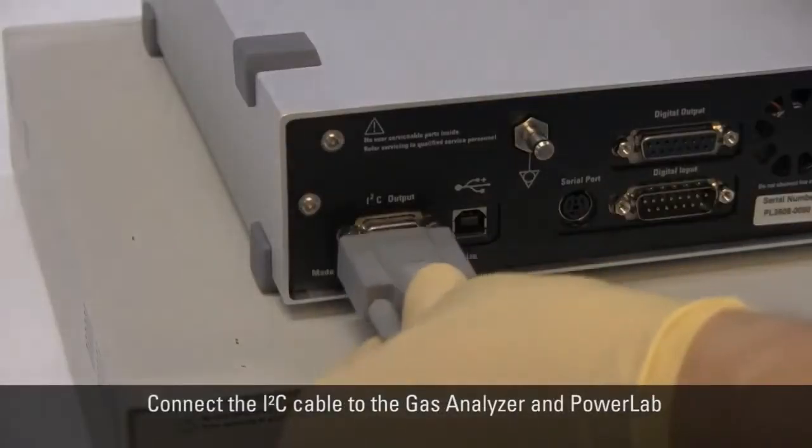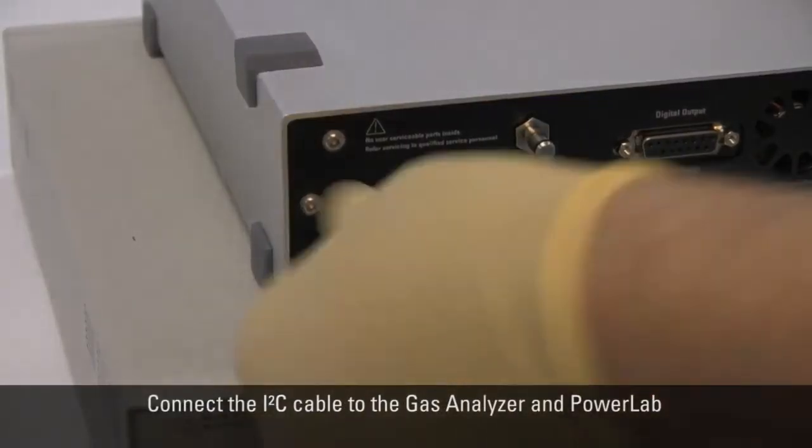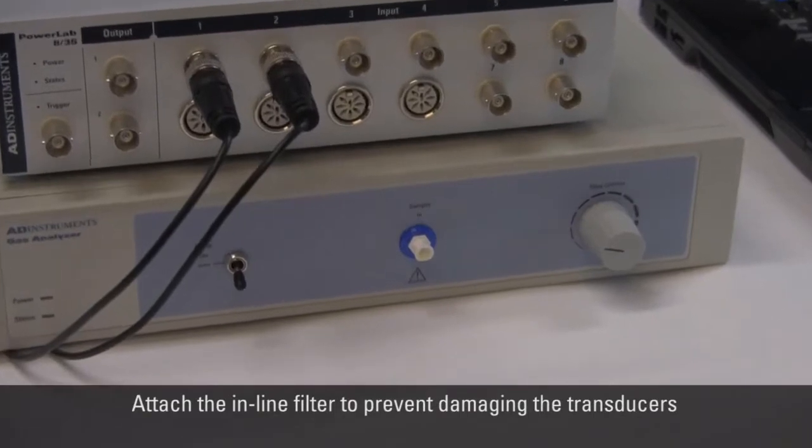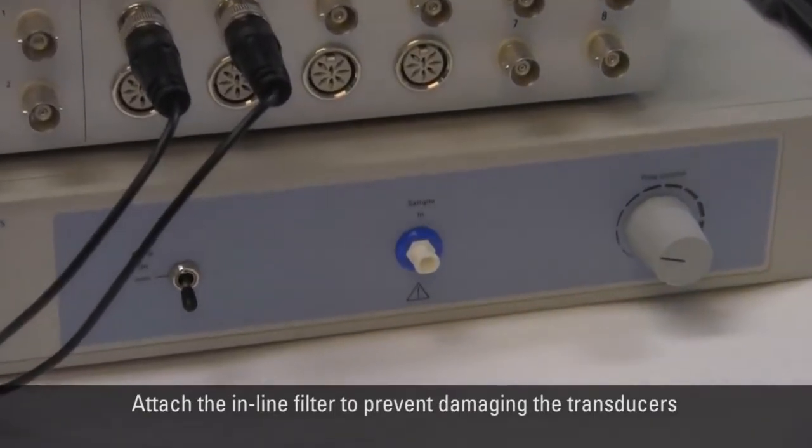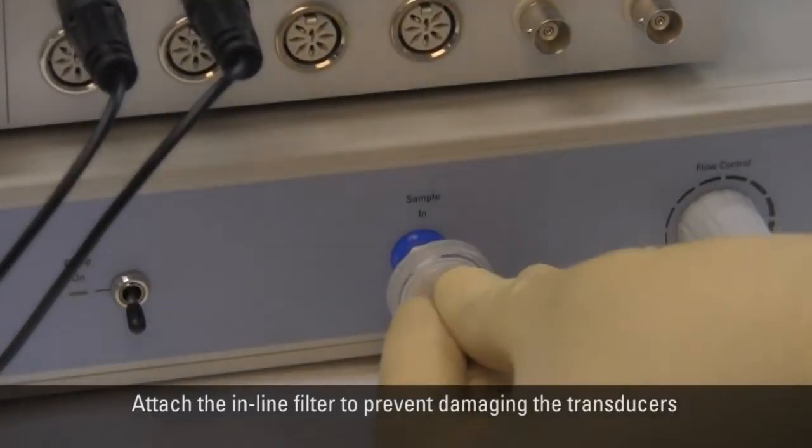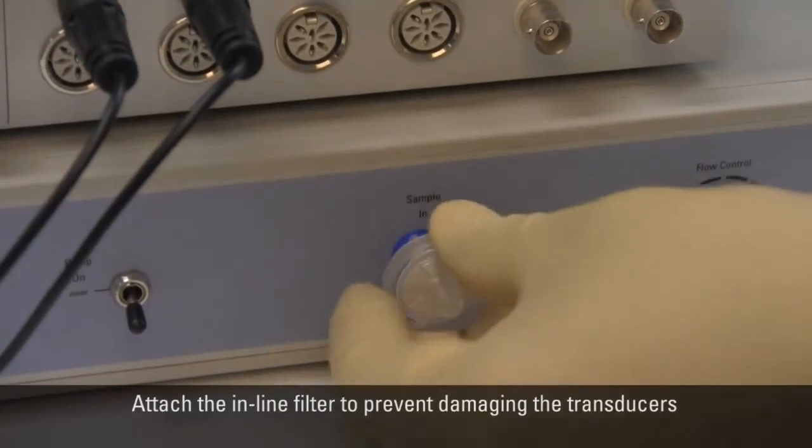Connect the I2C cable to the Gas Analyzer and PowerLab. Attach the inline filter to the sampling port of the Gas Analyzer to protect the transducers against moisture or damaging particulates.